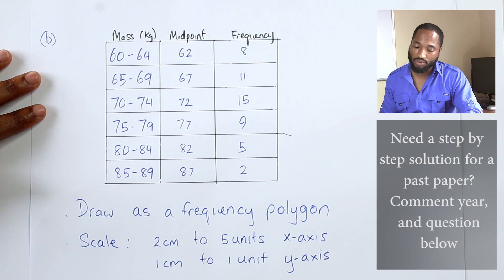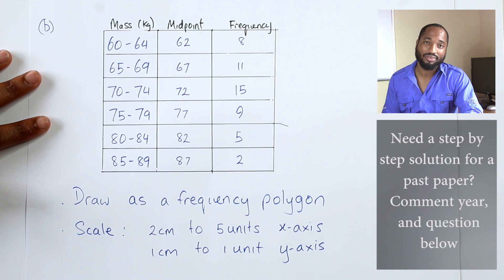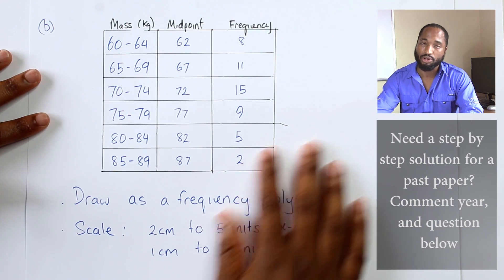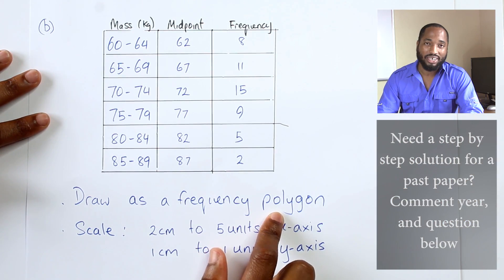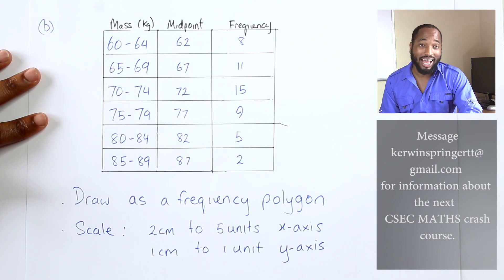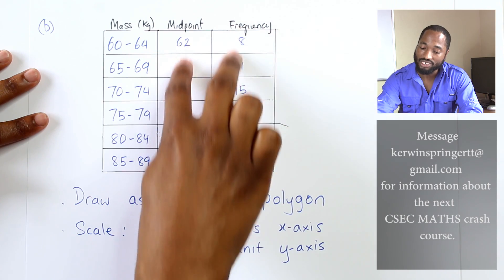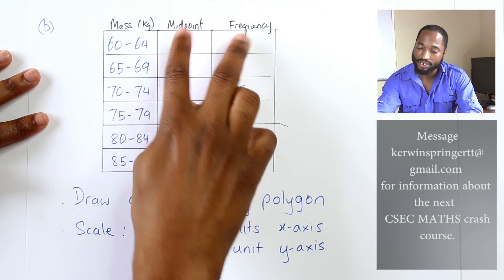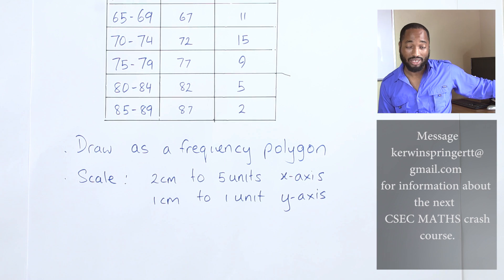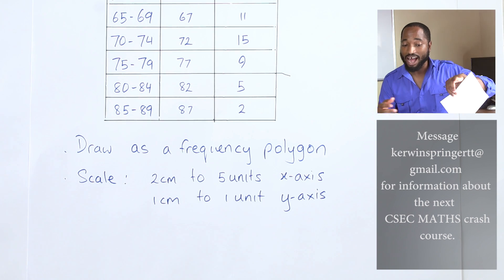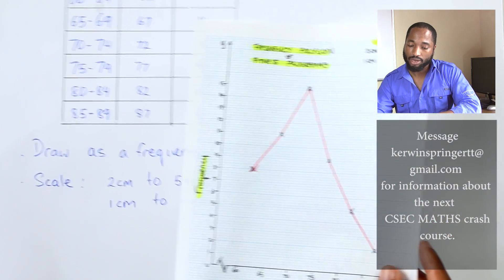They asked us about frequency polygon. A lot of people were preparing for histogram and stuff like that. The frequency polygon is simple. You need the midpoint, and in the question we were given the midpoint and the frequencies. It's basically these two points we are using to plot the coordinates. Here's a scale. The scale was given to us as well, so it was simple. This question was six marks, half of the full of number seven in terms of marks.